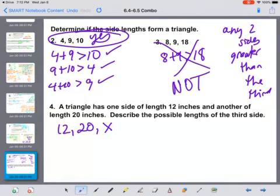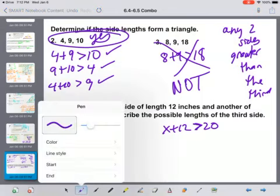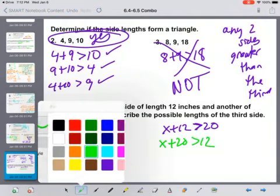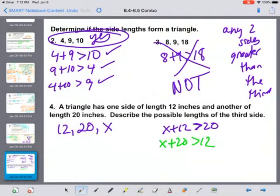So using what we just did up above in number 2, that means that X plus 12 has to be greater than 20. It also means that X plus 20 has to be greater than 12. And lastly, that 20 plus 12 has to be greater than X.